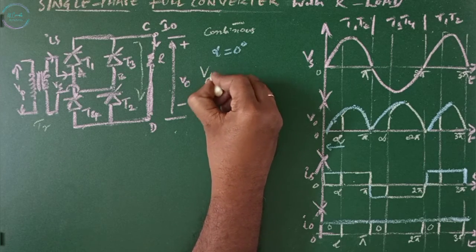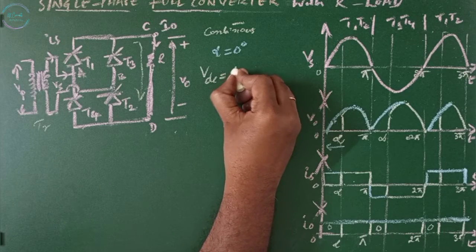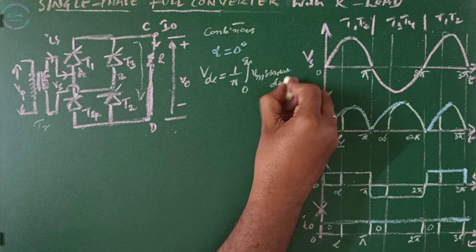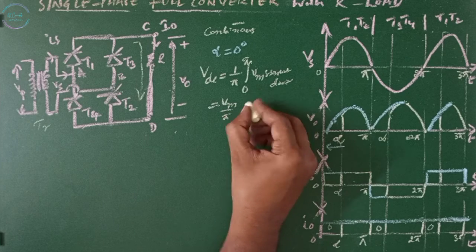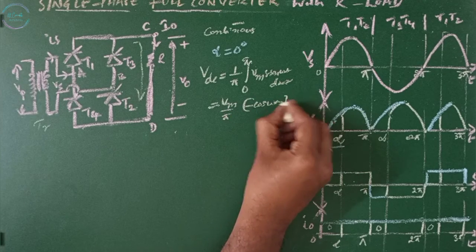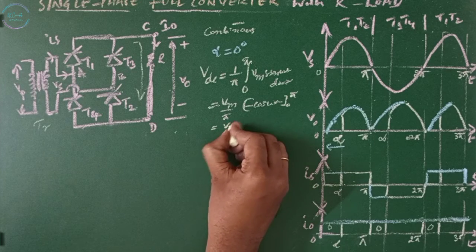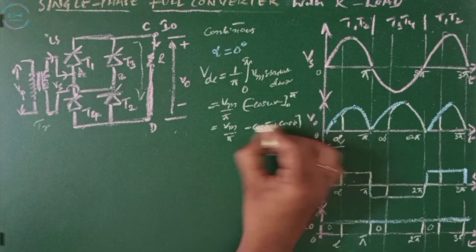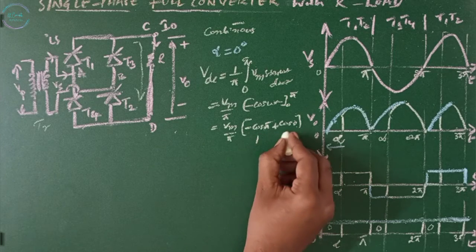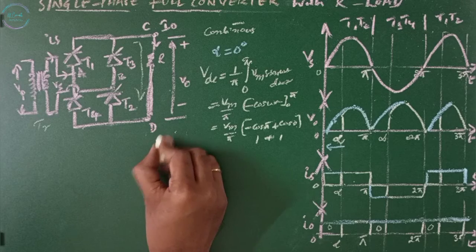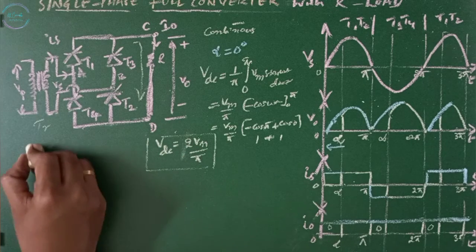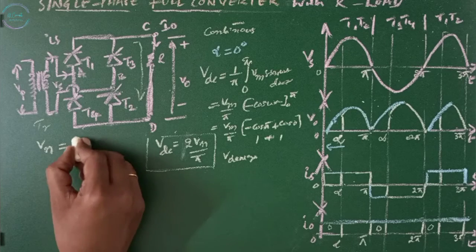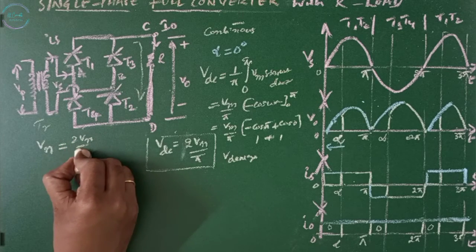For continuous operation, the average output Vdc is given by (1/pi) times the integral from 0 to pi of Vm·sin(omega-t) d(omega-t). This equals Vm/pi times [−cos(omega-t)] from 0 to pi, giving Vm/pi times [−cos(pi) − (−cos(0))]. Since −cos(pi) = 1 and cos(0) = 1, we get Vdc = (Vm/pi) × 2 = 2·Vm/pi.